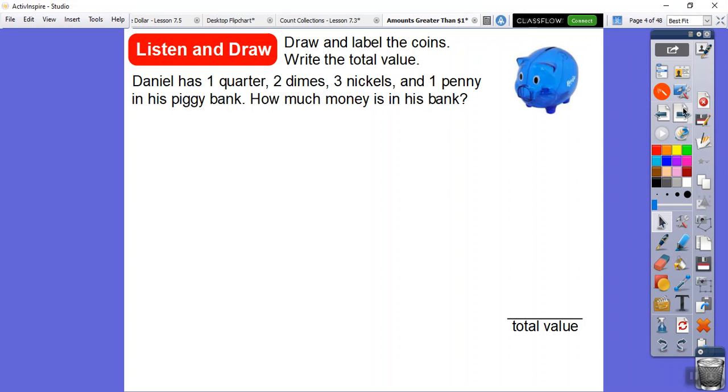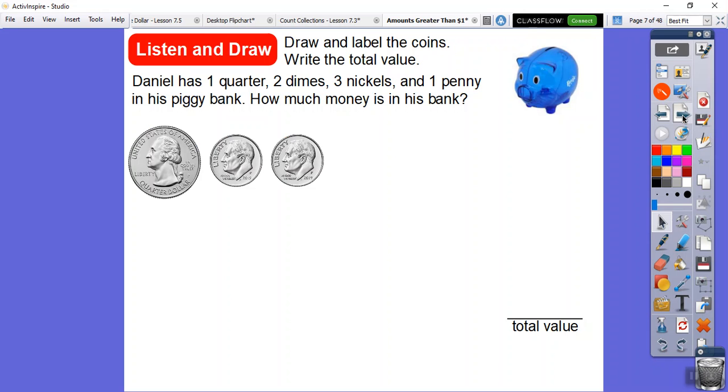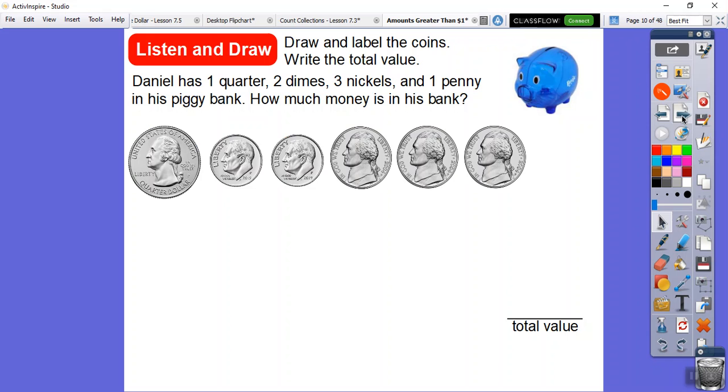So Daniel has one quarter, two dimes, three nickels, and a penny. Now notice that they're already in order of biggest to smallest, which is good. It's easier for me to add things up, but it's in this piggy bank. You guys have a piggy bank? I did. I had a couple. One was a pretend book, and if you opened up the book cover, it was a bank on the inside. So anyway, how much money does Daniel have in his bank? So here he has one quarter. He has two dimes. So there's one dime, there's two dimes. He has three nickels. So one, two, three, and then one penny.